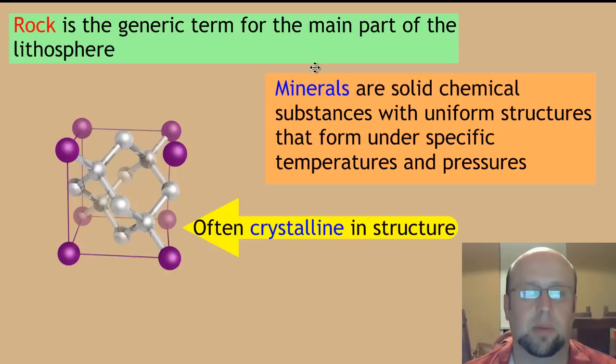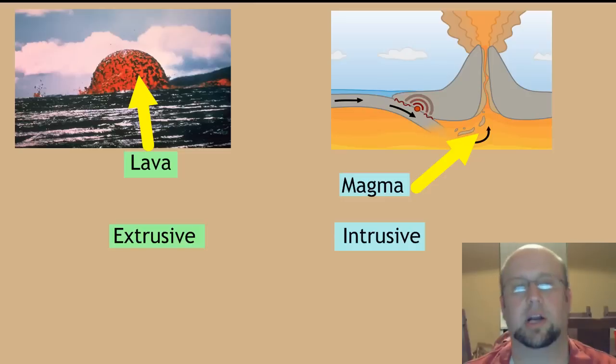Rocks are composed of minerals. Minerals are chemical substances that have very specific, uniform structures, and they form under very specific temperatures and pressures. Different minerals form at different temperatures and pressures. Most commonly, we're going to talk about minerals that have a crystalline structure, but that's not all of them. This is a crystalline structure of diamond, basically pure carbon. But they don't all have to have a crystalline structure. That's a chemistry term meaning they're in a very rigid, orderly, locked pattern.